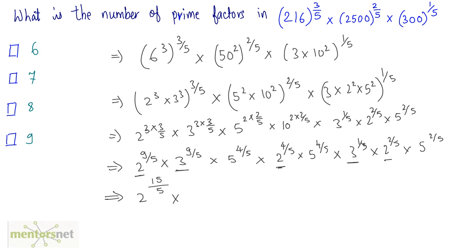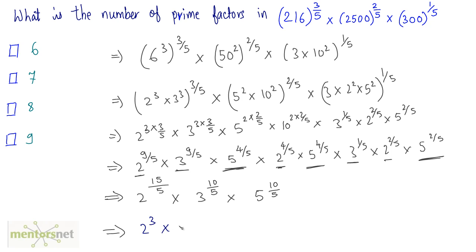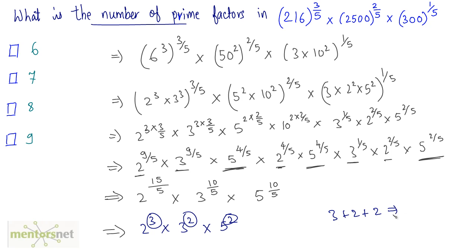Collecting powers of 3: 3 raised to 9 by 5 plus 1 by 5, so 3 raised to 10 by 5. Collecting powers of 5: 5 raised to 4 plus 4 plus 2 is 10, so 5 raised to 10 by 5. This simplifies to 2 raised to 3, times 3 raised to 2, times 5 raised to 2. So the total number of prime factors is 3 plus 2 plus 2, which equals 7. The total number of prime factors in this expression is 7.